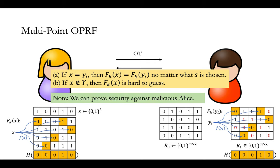I want to briefly mention that we can actually prove security against malicious Alice. Because what Alice can learn from this OT is a matrix that is information-theoretically random, so she doesn't learn anything about Bob's inputs. And if we assume the hash function to be a random oracle, then it will be easy to extract her inputs.